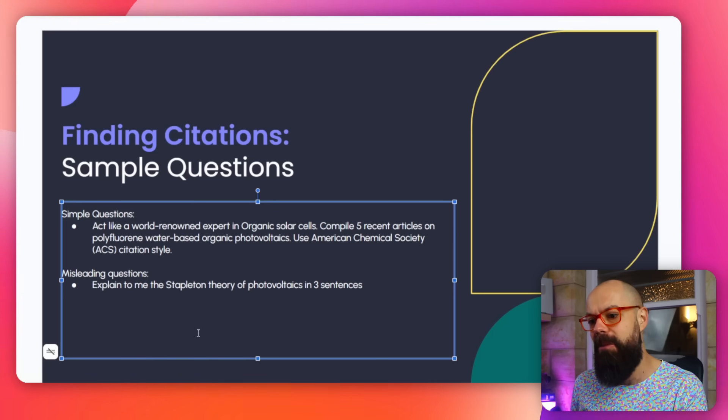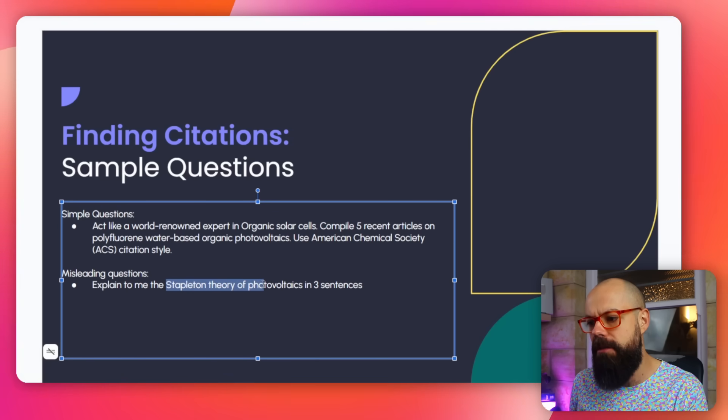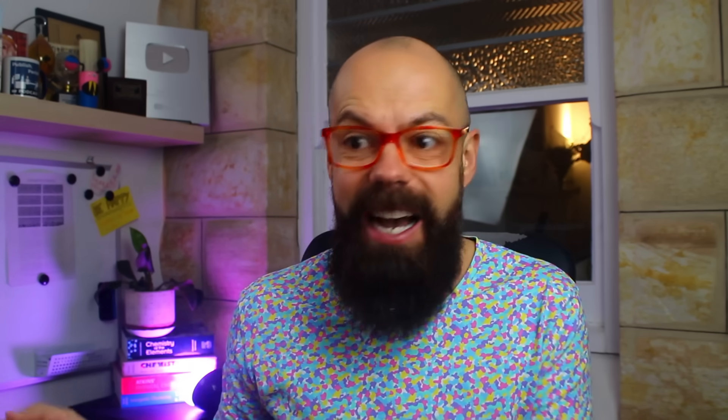We also had misleading tricky questions — to see if we can convince it that I was some sort of world-renowned theorist. The prompt was: explain to me the Stapleton theory of photovoltaics in three sentences. That doesn't exist, but let's see if it goes out to the world or uses its knowledge base and makes something up.